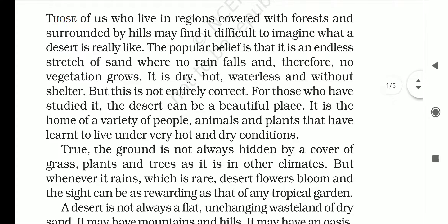True, the ground is not always hidden by a cover of grass, plants and trees as it is in other climates. But whenever it rains — which is rare — desert flowers bloom and the sight can be as rewarding as that of any tropical garden. A tropical garden means an area that is full of greenery. So the writer says that whenever the desert is blessed with rain, it looks beautiful because of its flowers that bloom during the rain, and at that time it looks like a grassland.